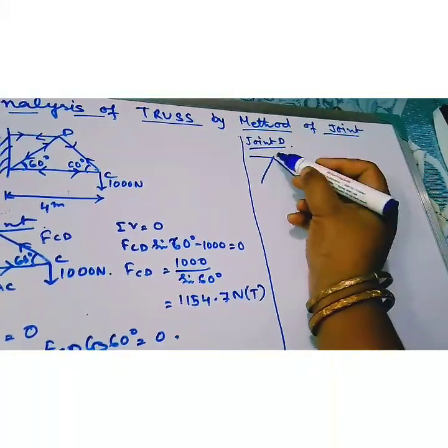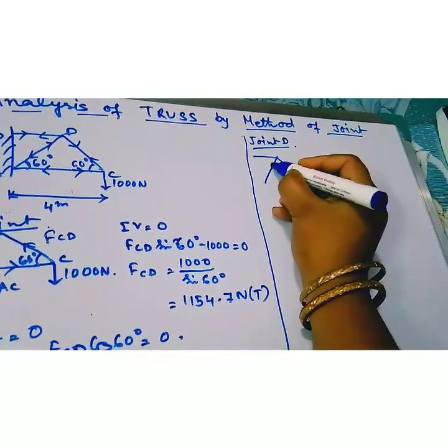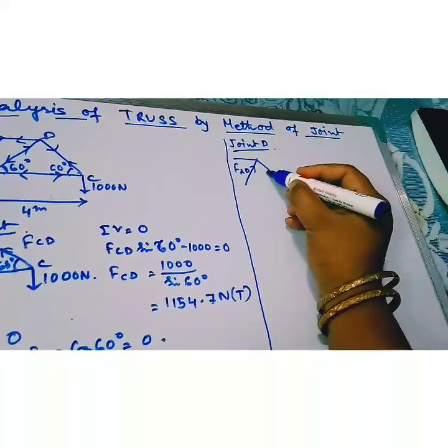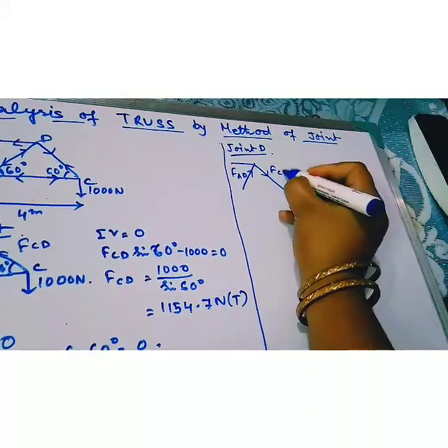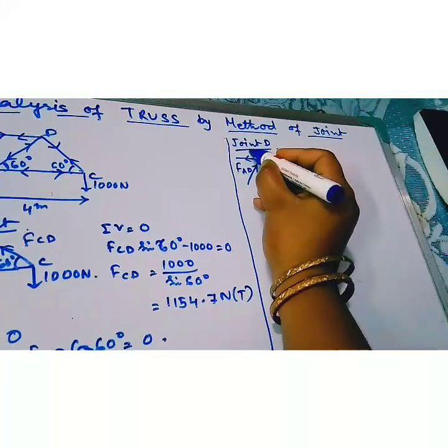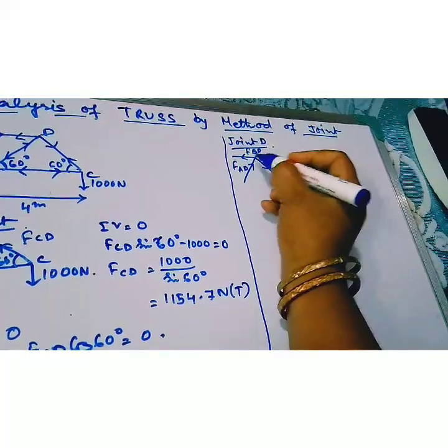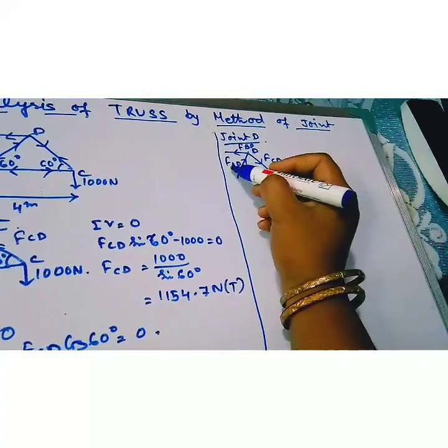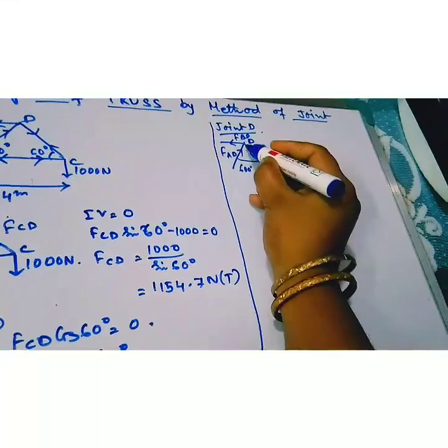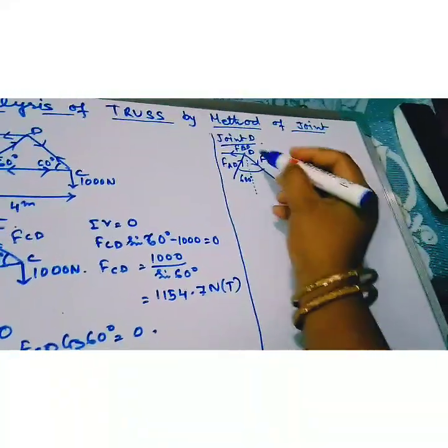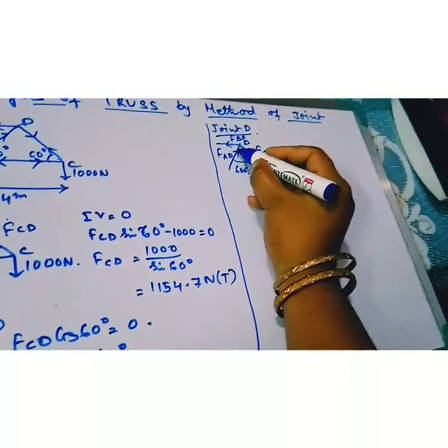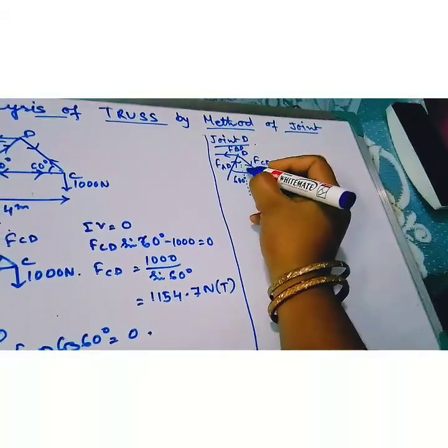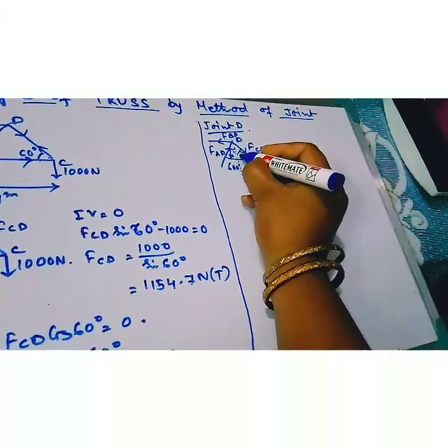Here three force FAD is compression, FCD is tension and FBD is tension. The angle between the force AD and CD is total angle is 60 degree. We draw a line which is bisect the angle 60 degree that is the 30 degree and 30 degree.